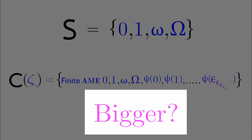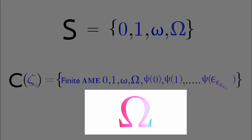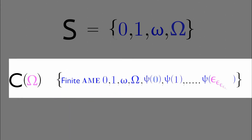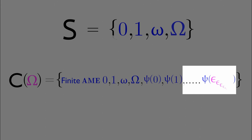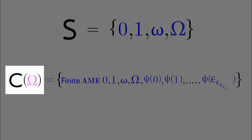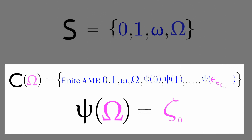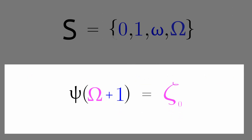So how do we get bigger if zeta naught is the limit? Let's take a look at capital omega. Capital omega will always be a member of set C. So if we do C omega, this will also only contain up to the finite nestings of epsilons. Because omega is a member of set C, we can create Psi omega. This is also just going to equal zeta naught. If we do Psi omega plus 1, this is going to be equal to epsilon zeta naught plus 1.